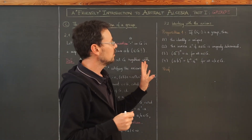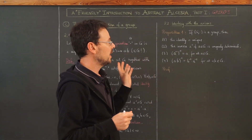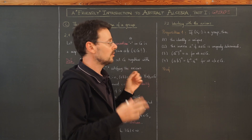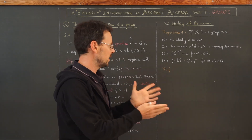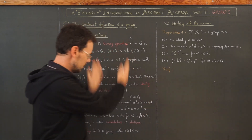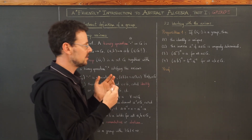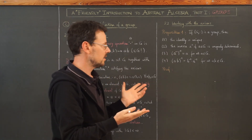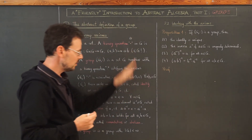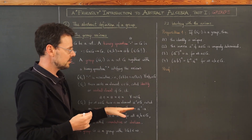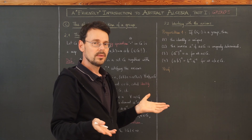We continue by really working with the axioms, again without any reference to a specific example, but simply using these axioms. The nice thing is: if we prove something using only these axioms, we know it applies to any group.